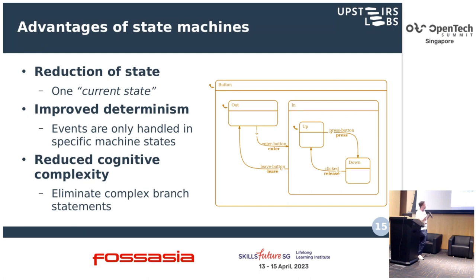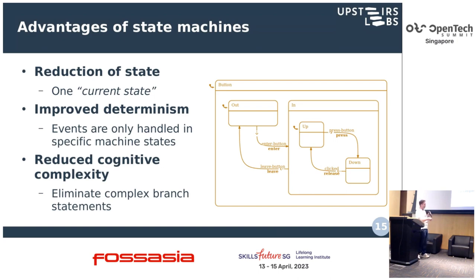You just feed the events into the state machine and have one callback that says: when I go from down to up and I'm inside the button, it's clicked. This is much more safe and deterministic because as your program evolves and state gets added, you have this guarantee that such-and-such event cannot happen and cannot be handled in this state, which reduces the amount of branching statements and the potential for error.